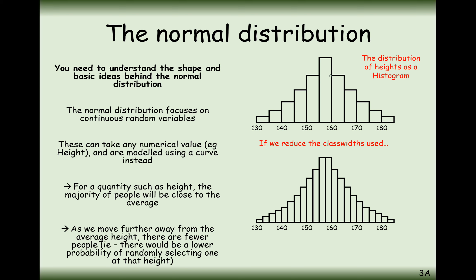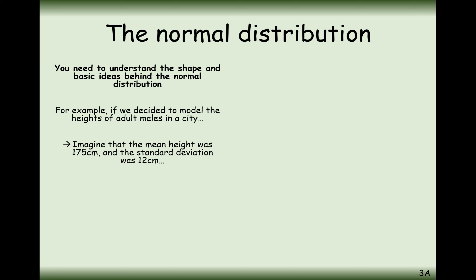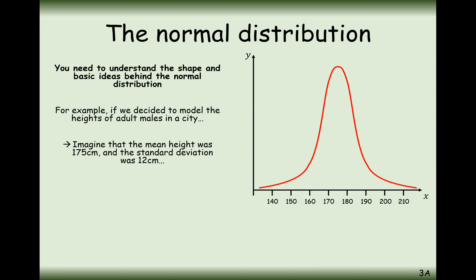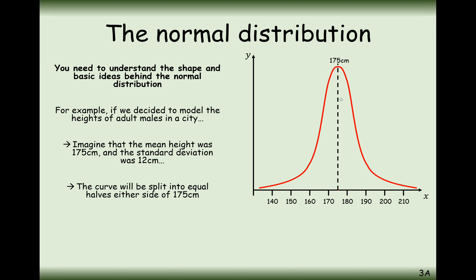What we do here is effectively divide all of those histogram bars into infinitely small widths and connect all the peaks together to form a frequency density graph. This produces a perfectly symmetric bell-shaped curve. With a mean height of 175, the distribution is perfectly centred at 175. The standard deviation affects the width: if it were lower than 12 the graph would be skinnier, and if it were higher than 12 centimetres the graph would be wider and lower at its peak.